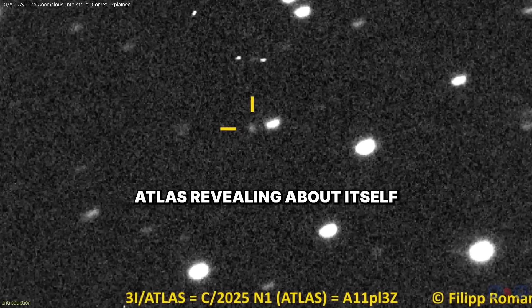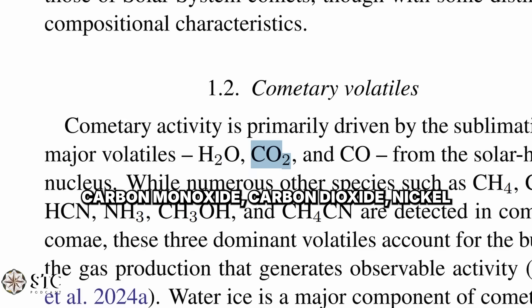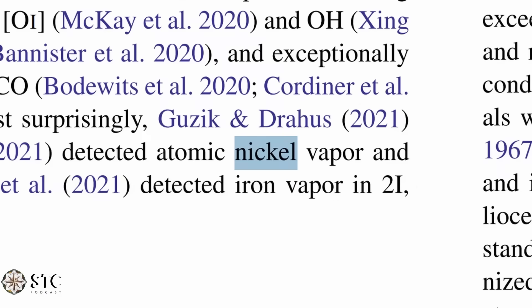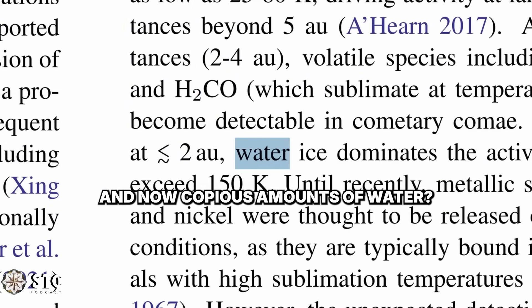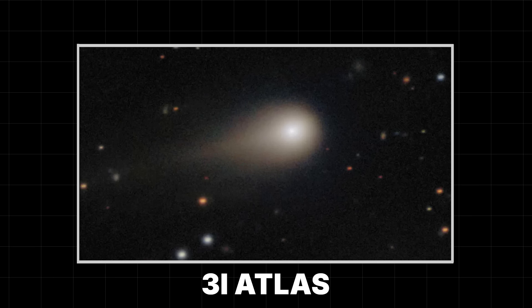What is 3i Atlas revealing about itself as it continues to release carbon monoxide, carbon dioxide, nickel, and now copious amounts of water? A visitor from deep space, 3i Atlas, has been puzzling astronomers for months.